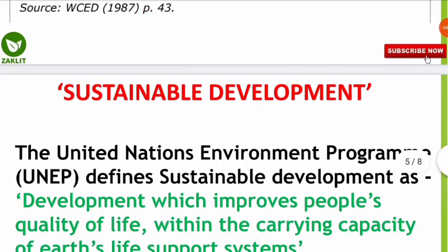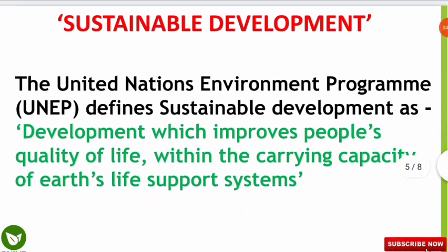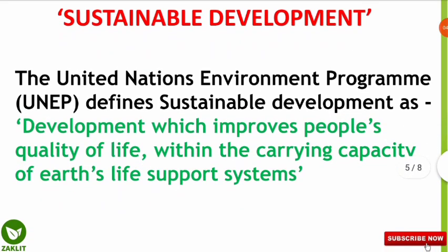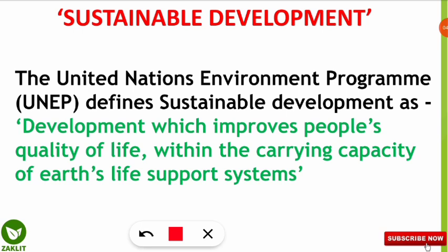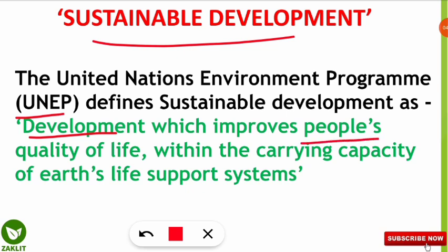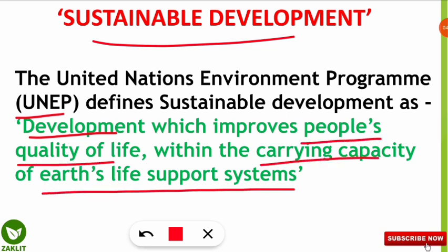Now let's look at the definition given by the United Nations Environment Programme. The definition of sustainable development given by UNEP is: 'Development which improves people's quality of life within the carrying capacity of Earth's life support system.' It should improve quality of life without compromising Earth's life support system.